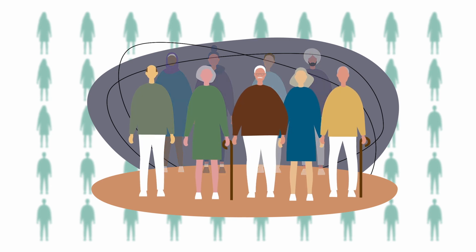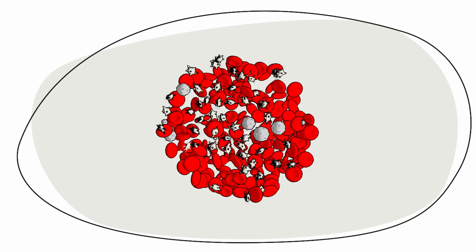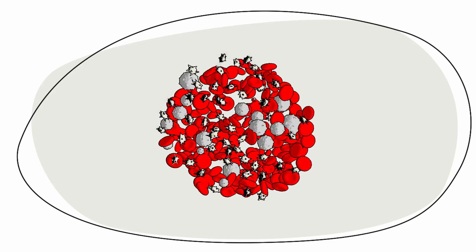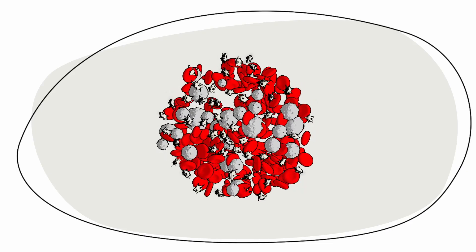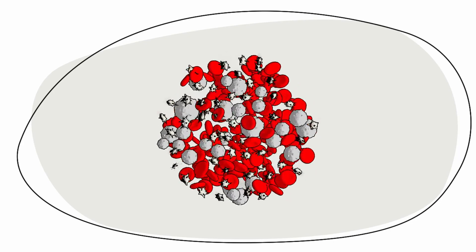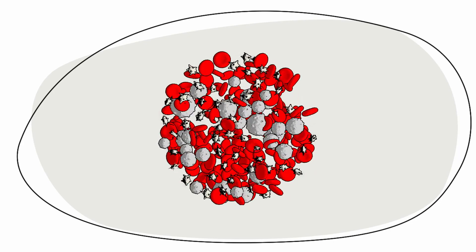DLBCL starts when your B cells, a type of white blood cell that normally fights off infection, grow too quickly or too slowly.